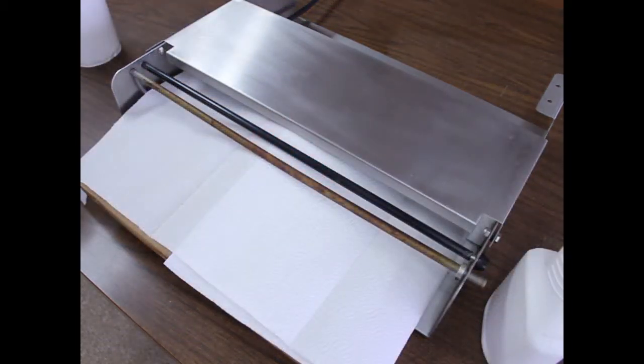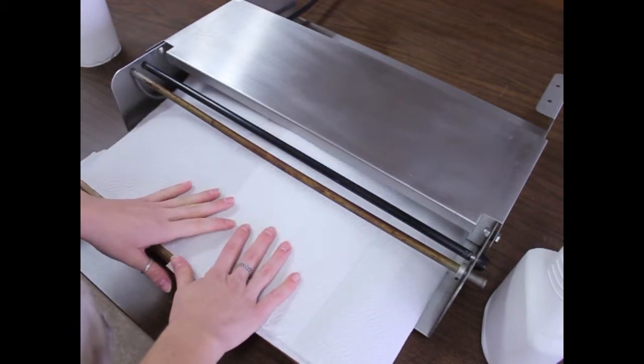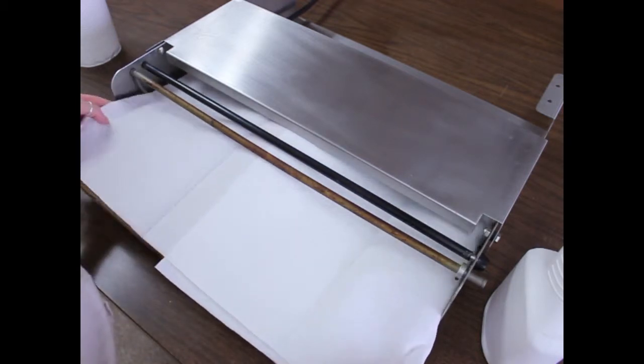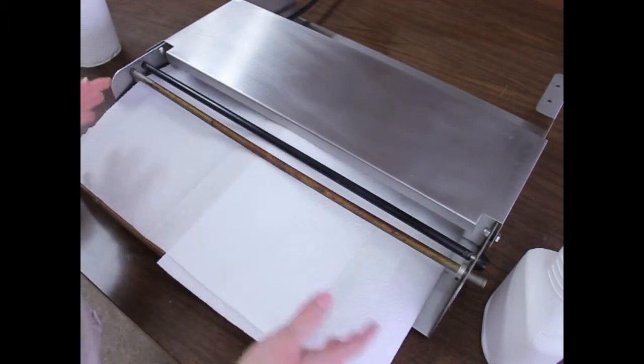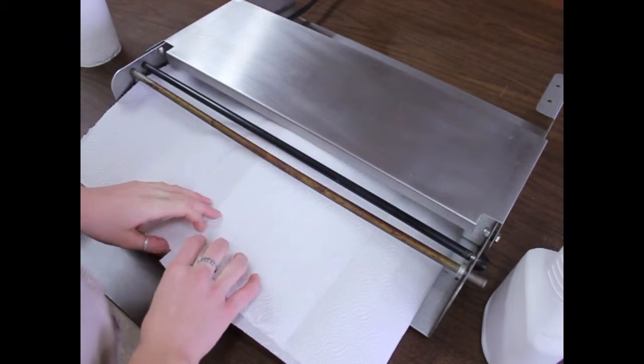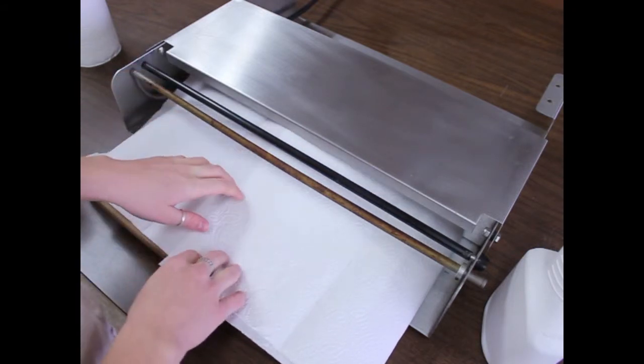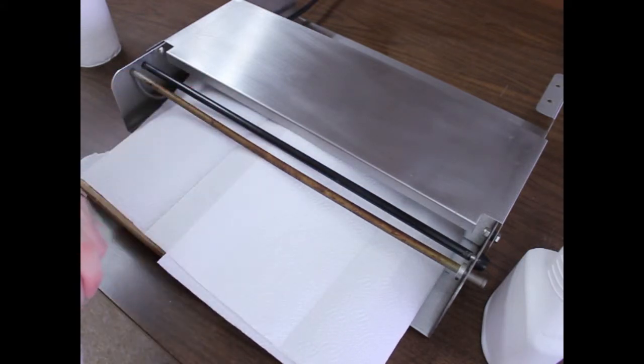The first thing that you want to do is put some paper towels underneath the cutoff rod. That's going to protect the area underneath from getting all the gunk that we're going to be cleaning off. I put about two layers underneath the cutoff rod to protect the area.